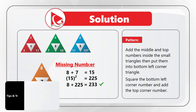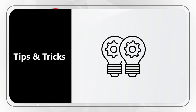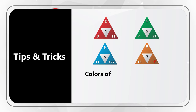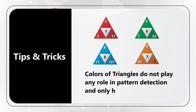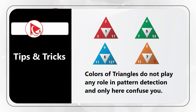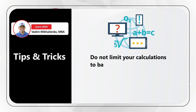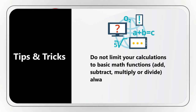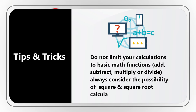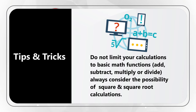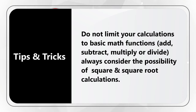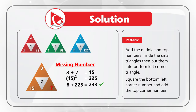Let me share some tips and tricks on how to better solve these types of challenges. The triangles are of different colors — colors are only there to confuse you and can be completely ignored. Another trick: people typically limit calculations to adding, subtracting, multiplying, and dividing, but keep in mind there is always a possibility of squaring numbers and finding square roots. It's good to remember squares of particular numbers up to 20 so you can manipulate them in your head without a calculator. Share any other tips in comments so we can all learn.